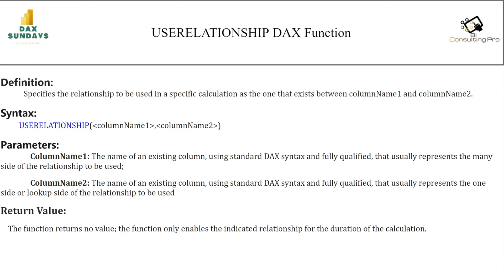The syntax is quite simple: it takes column one and column two. Column one is the name of an existing column using standard DAX syntax, fully qualified, and usually represents the many side of the relationship — meaning column one should come from your fact table. Column two uses the single side of the relationship; it is the name of an existing column, fully qualified, that usually represents the one side or lookup side of the relationship. Dimensional tables are generally the one side, and fact tables are the many side.